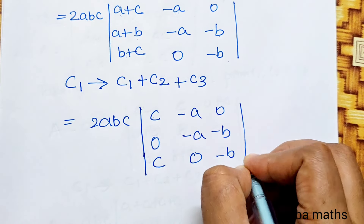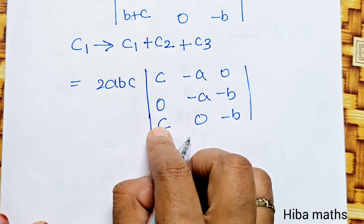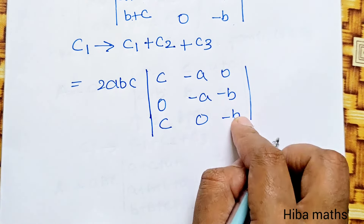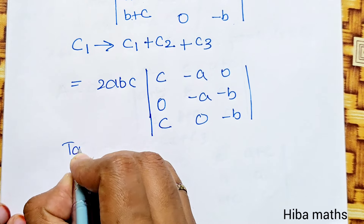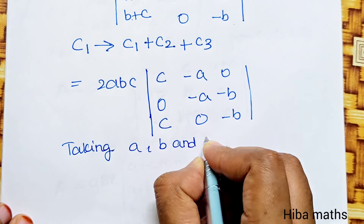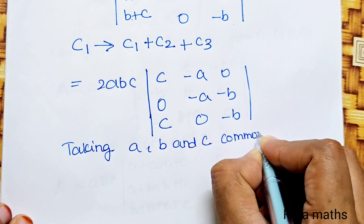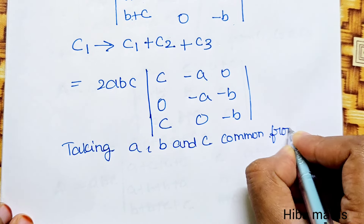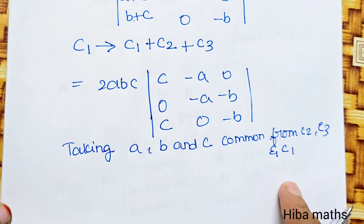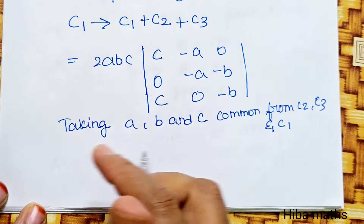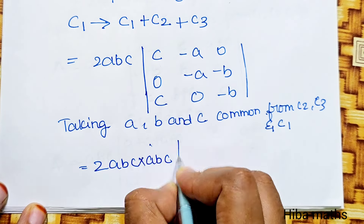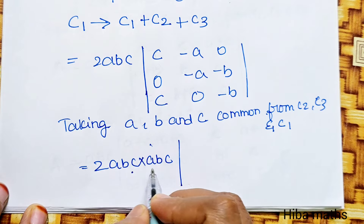0, minus B. Now C1, C2, C3. Taking A, B, and C common from R1, C2, B1, C3, C1, C1. This is the first change. 2A, B, C is 1. This is 2 times A·B·C. This is 2 times A·B·C.